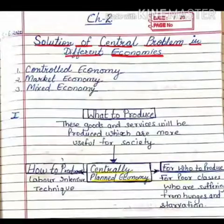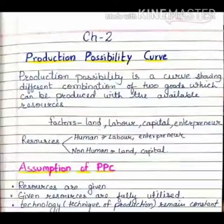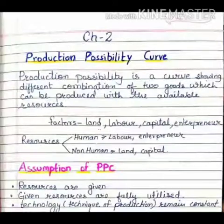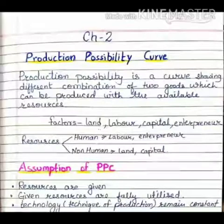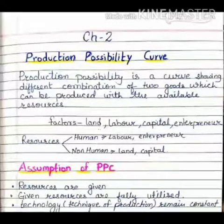Now today we will study Production Possibility Curve. Production Possibility Curve is a curve showing different combinations of two goods which can be produced with the available resources.